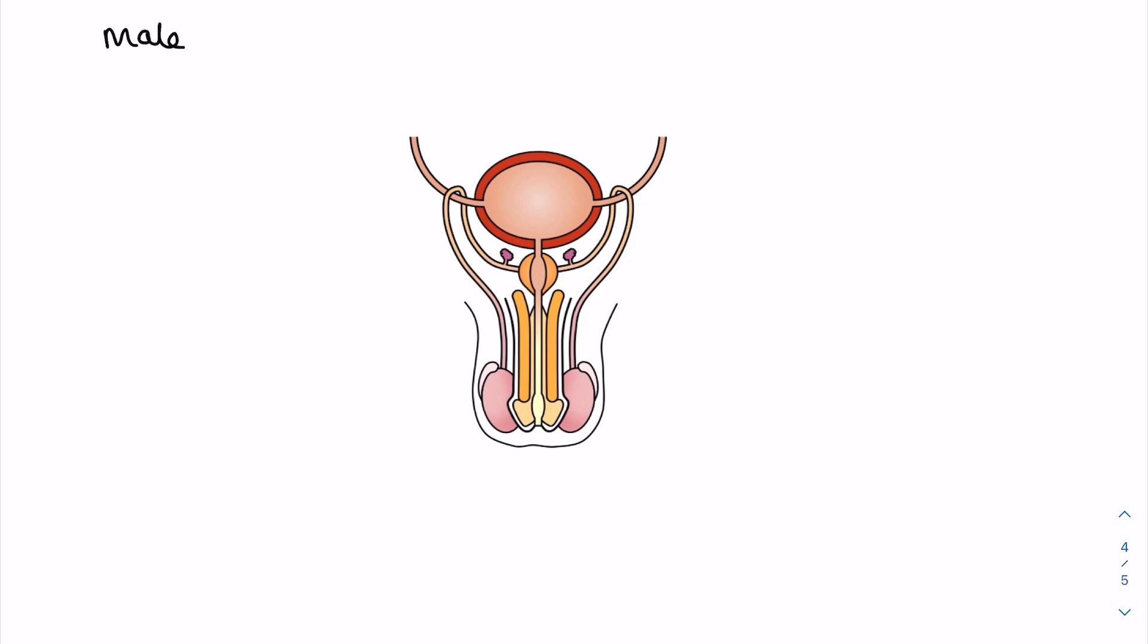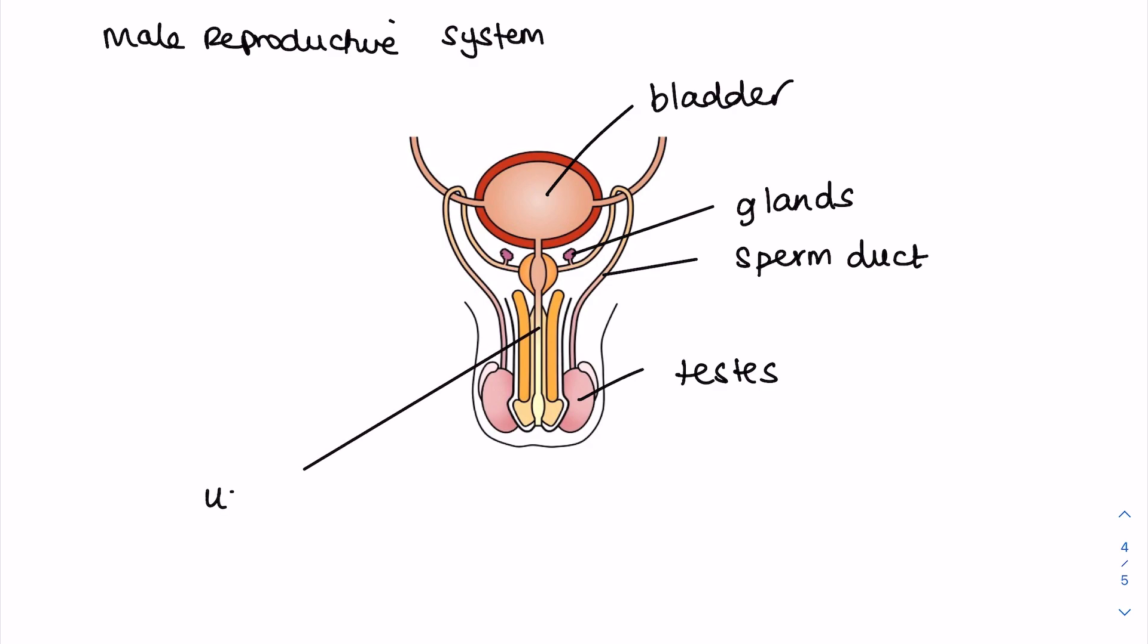Now we have the male reproductive system, which I won't even attempt to draw. Here's the bladder where urine is stored. Down here you have the testes which produce sperm and testosterone. This tube that leads from the testes to the urethra has several names but I'm going to call it the sperm duct. There are several glands which contribute nutrients to that sperm. This tube helps semen and urine leave the body. This fleshy organ here is the penis, and then the sack of skin which holds the testes outside of the body is known as the scrotum.